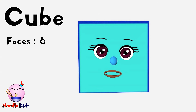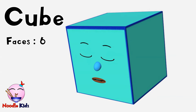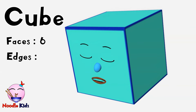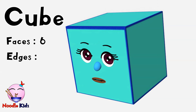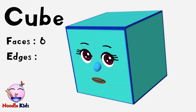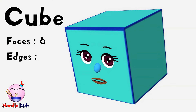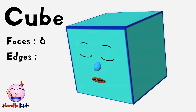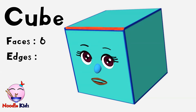Some 3D shapes also have edges. Do you know what an edge is? An edge is the place where two flat faces meet. Edges are straight — they cannot be curved. Look at this. This is one of my edges.